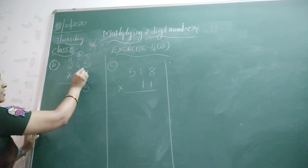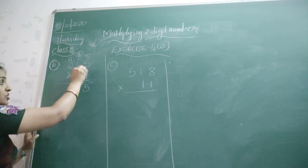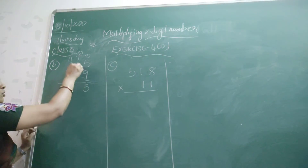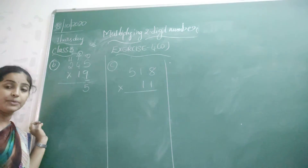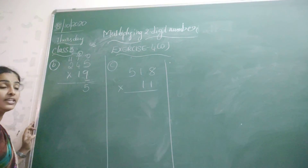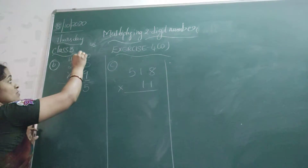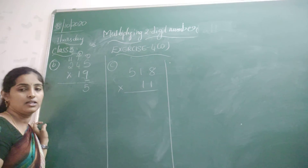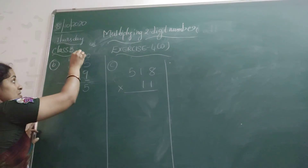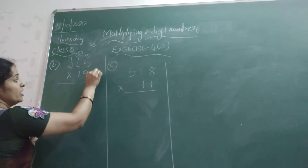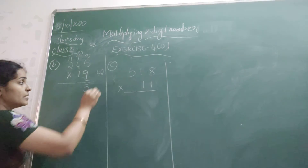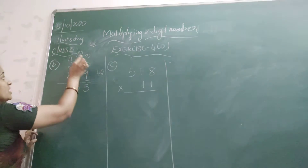Now continue. 9 × 4 — how much is 9 × 4? It is 36. Now add the carry: 36 plus 4 is 40. So you are getting 40. Write down 0 and take 4 as a carry for the next one.